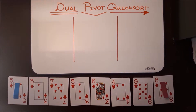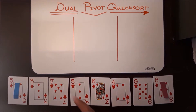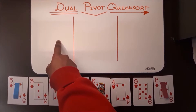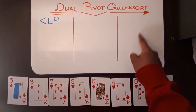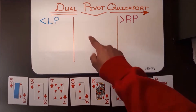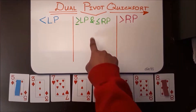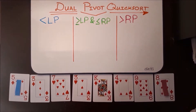The second step is you're gonna have to partition your array into three subarrays relative to the pivots. The first subarray is gonna be less than left pivot, the second is greater than right pivot, and the third is between left pivot and right pivot. Now, let's start sorting the array.